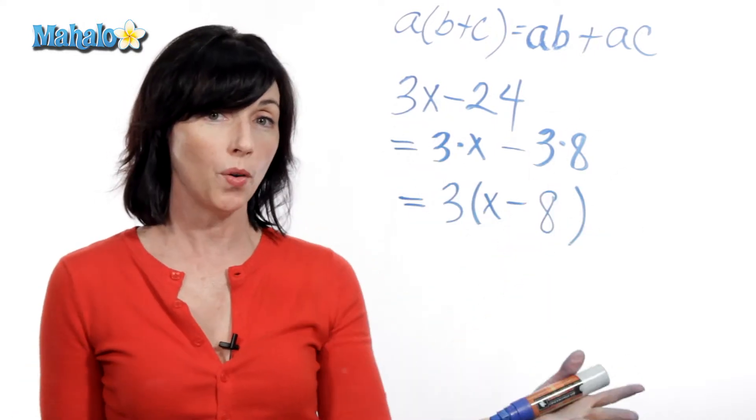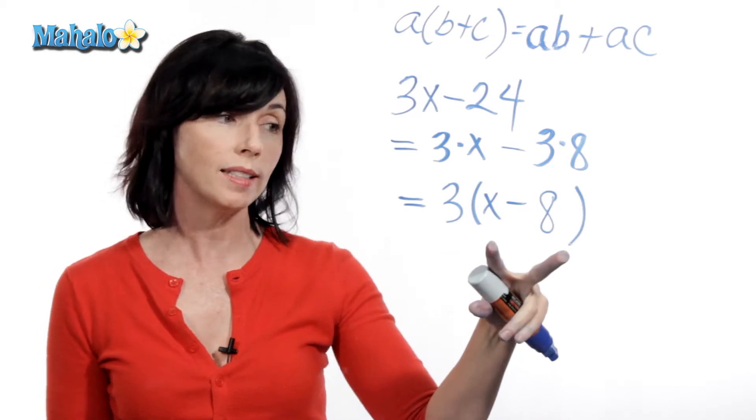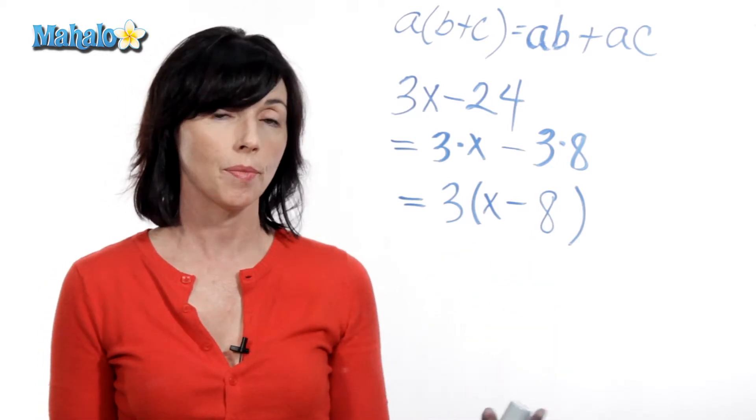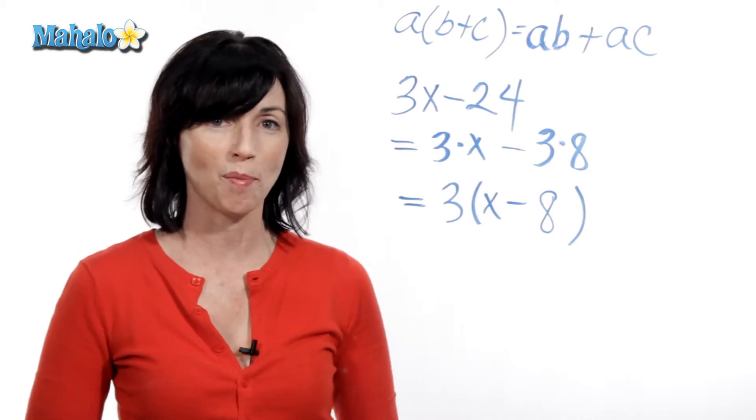So 3x minus 24 is equal to 3 times the quantity x minus 8. That's another way of using the distributive property.